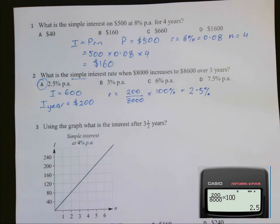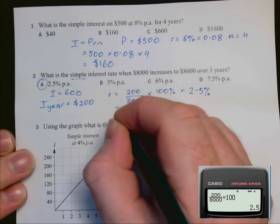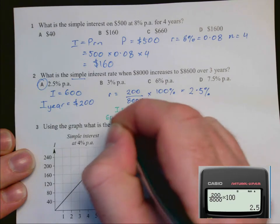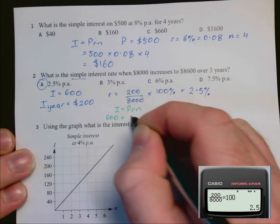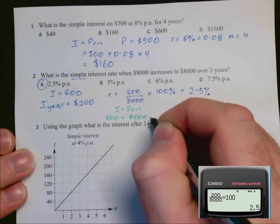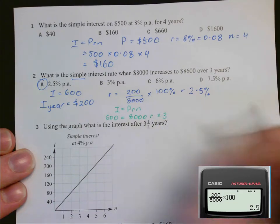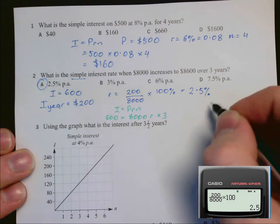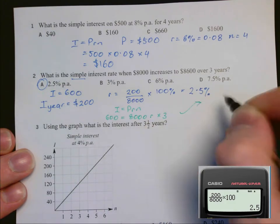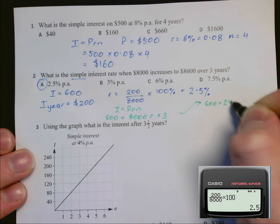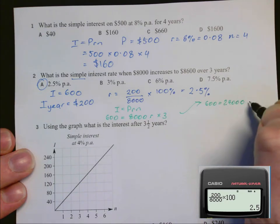Alternatively, we could have done this by substituting into the formula I equals PRN and solving. We know the interest is 600, the principal was 8,000, the rate we don't know, and N is 3. So we have 600 equal to 24,000 times R. Three times 8,000.